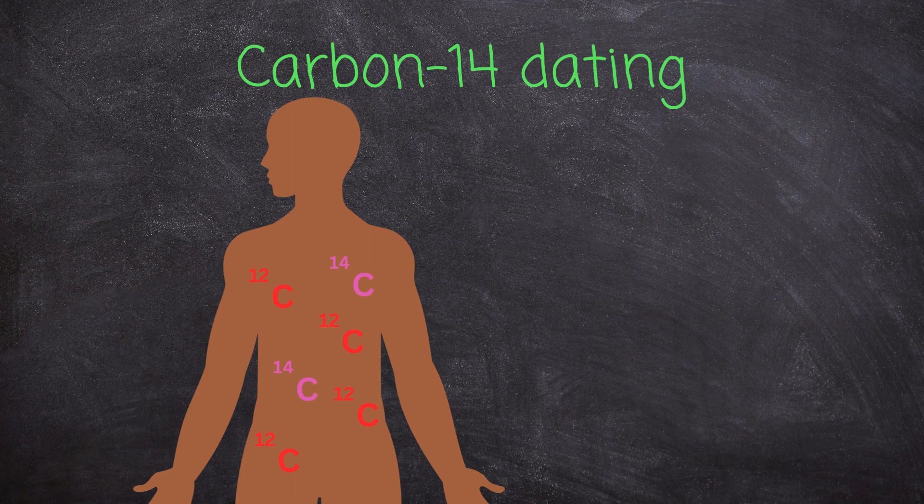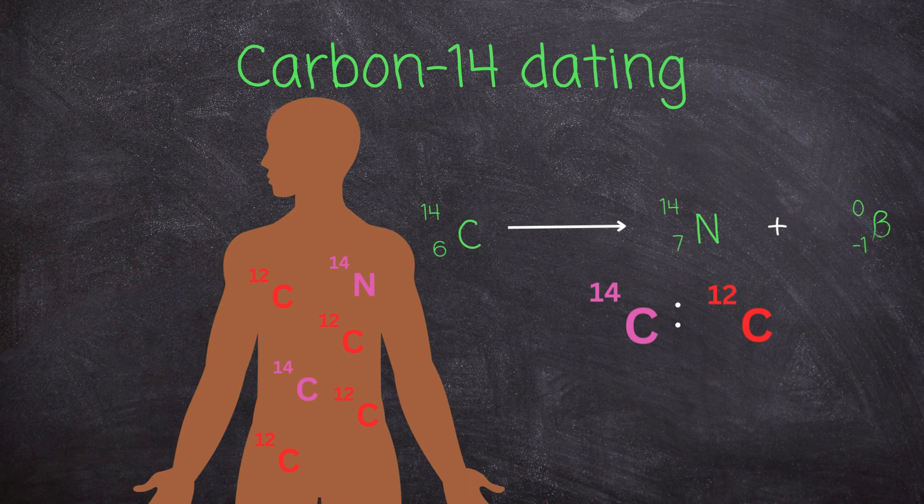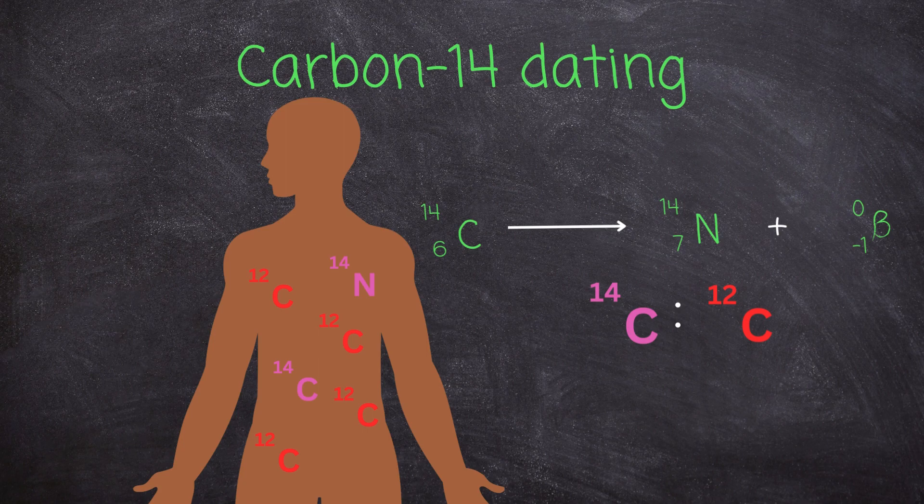By measuring the remaining ratio of carbon-14 to carbon-12 in a sample, scientists can estimate how long it has been since the organism died. As carbon-14 decays over time, the ratio of carbon-14 to carbon-12 decreases.